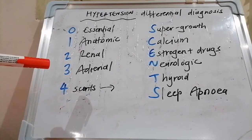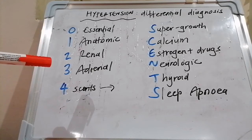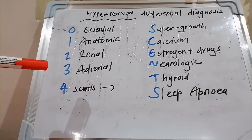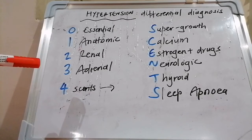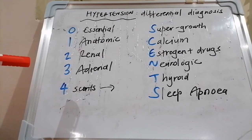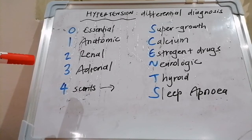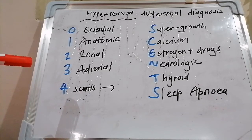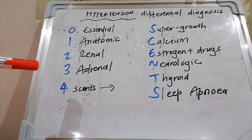Adrenal causes include phaeochromocytoma, Conn's syndrome, and Cushing's syndrome. These present as hypertension with hypokalemia. Other causes of hypertension with hypokalemia include Bartter syndrome, where there's a problem with the sodium-potassium-2-chloride channel in the thick ascending limb of the loop of Henle — which is analogous to using a loop diuretic.